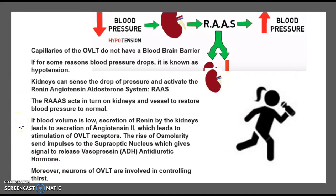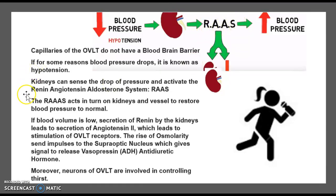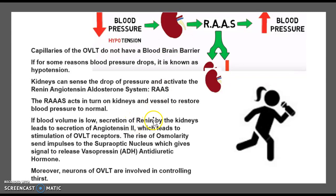Looking at the OVLT and its interaction with blood pressure: if your blood pressure drops, we call that hypotension. When you have hypotension, the kidneys will sense that drop in blood pressure and activate a system called RAAS — the renin-angiotensin-aldosterone system — which gets the blood pressure back up. The system first gets the kidneys to produce a hormone called renin.